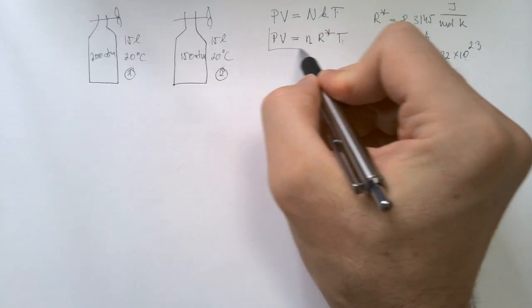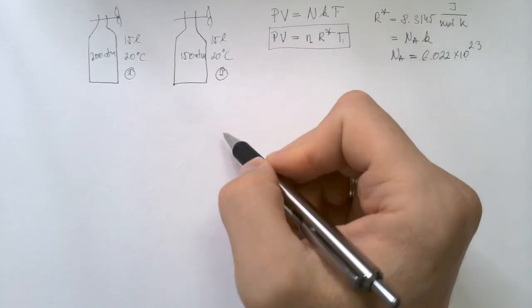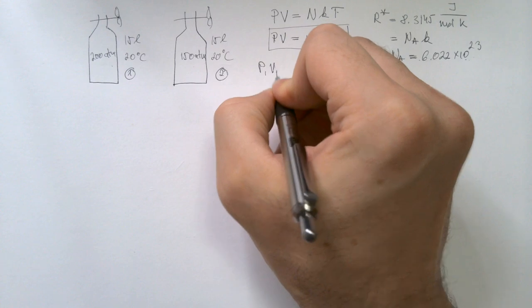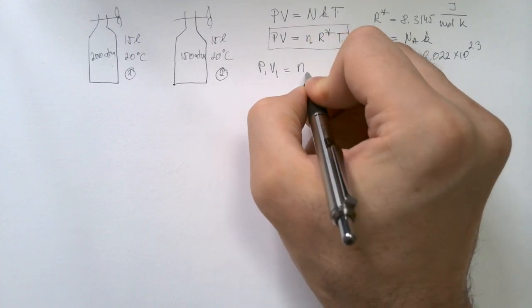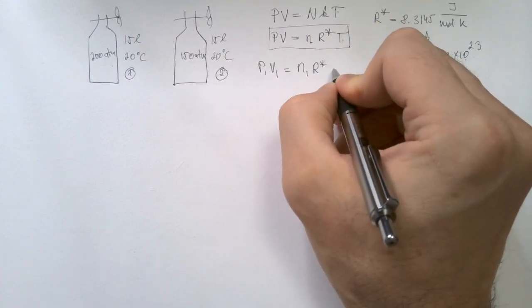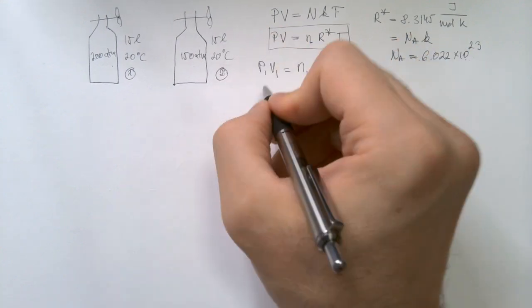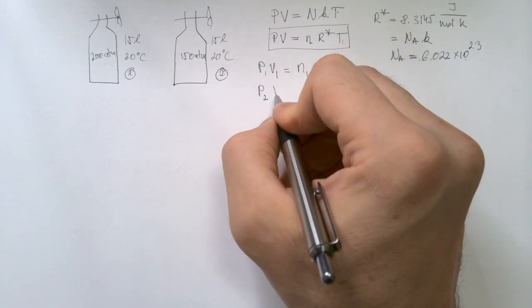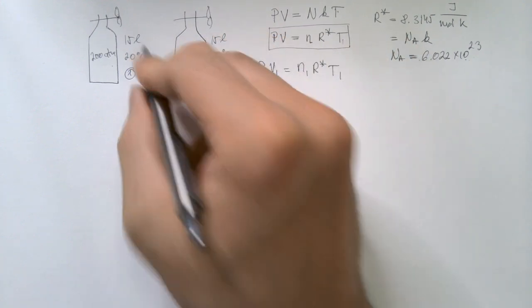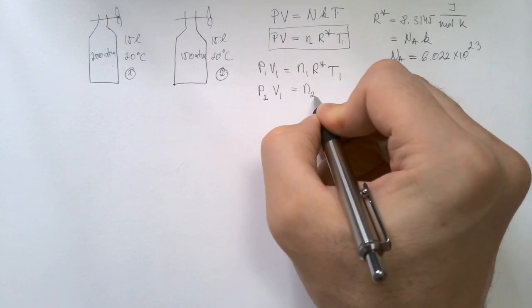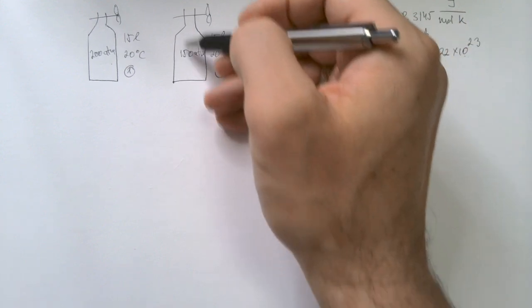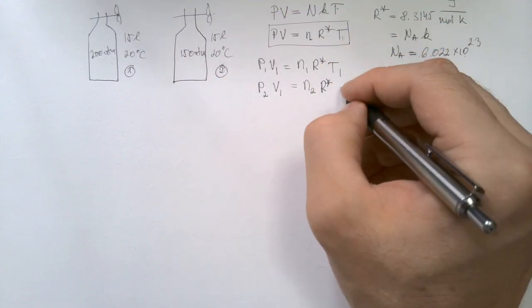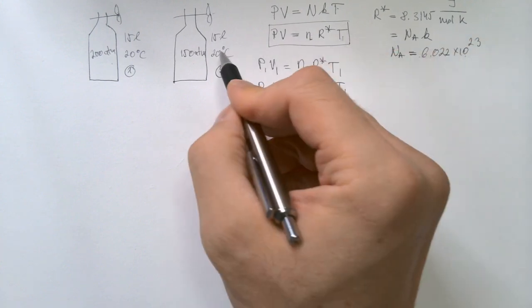If we now apply this equation of state for these two conditions, then I will have that P1V1 is equal N1 R star T1. In condition 2, I will have that pressure P2, that is now 150 atmospheres, is the same volume V1, that is unchanged, equals N2, because certain number of moles escaped when we open the valve, R star, this universal gas constant T1, because temperature is unchanged.